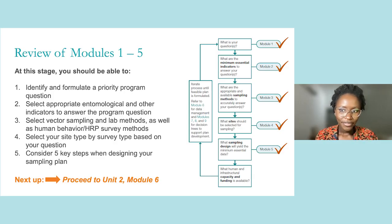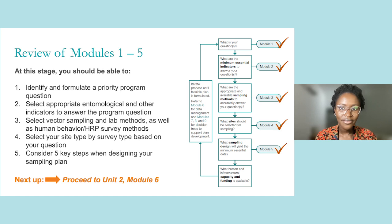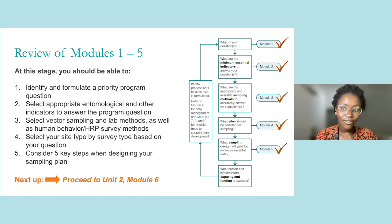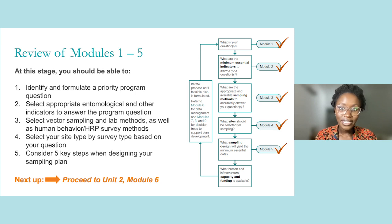You have now completed Module 5 of Unit 2. At this stage, you should be able to: one, formulate your program question; two, use your priority program question to guide the selection of indicators to address this question; three, select sampling and analysis methods including human behavior and HRP surveys to better describe vector-human contact points; four, identify the survey type and site type most appropriate for your priority program question; and five, design a sampling plan for operational entomological collections. Next is Module 6 of Unit 2, where we will discuss entomological data management. We invite you to proceed to that module now. On behalf of UCSF's Malaria Elimination Initiative, thank you for listening and we hope this was a productive session.